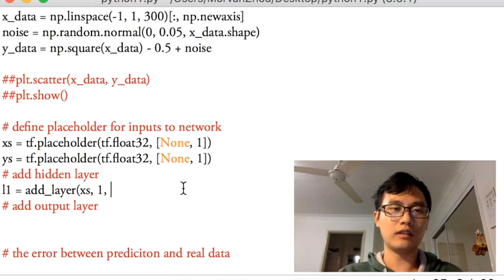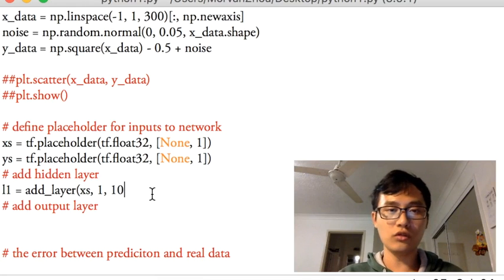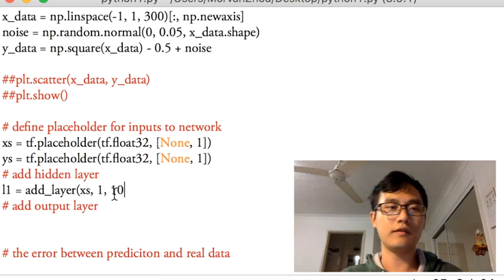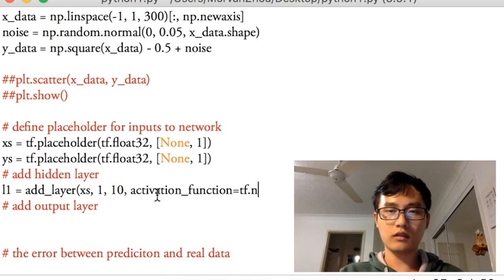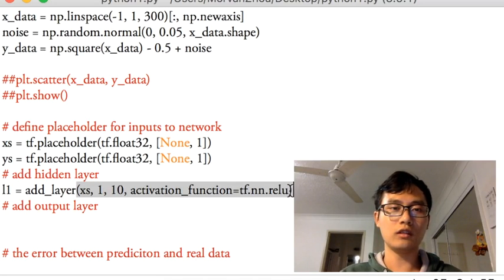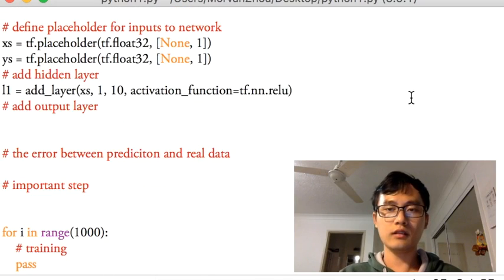And the output size, I assume it will have 10 hidden units or hidden neurons for this layer. So I use 10, but you can choose the number you want. But in this example, it's 10. And the activation function, I use tf.nn.relu. I mentioned before, this is a nonlinear function.